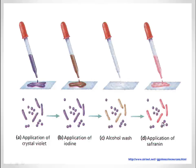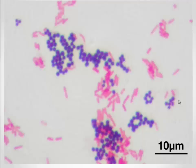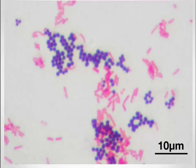Observe under the oil immersion lens in a microscope. In the microscopic observation, the purple-colored bacteria in cocci form are gram positive bacteria, while the pink-colored bacteria, which are short rods, are gram negative bacteria. That's all about gram staining.